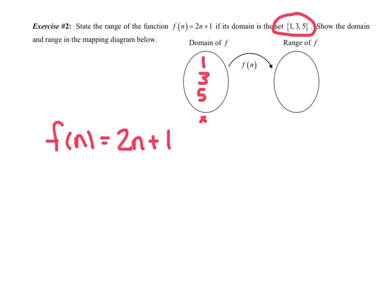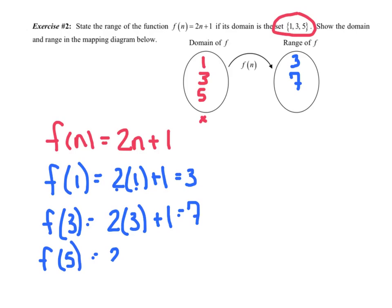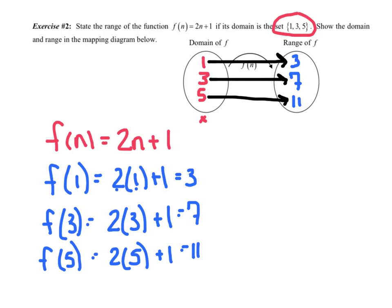I just have to find the range by evaluating each function. f(1): substituting 1 in place of n, 2 times 1 is 2 plus 1 is 3 — a member of my range. f(3): 2 times 3 plus 1 is 6 plus 1 is 7. And f(5): 2 times 5 plus 1 is 10 plus 1, which is 11. My last step is to draw arrows: 1 went to 3, 3 went to 7, and 5 went to 11. That's a mapping of my domain to my range.